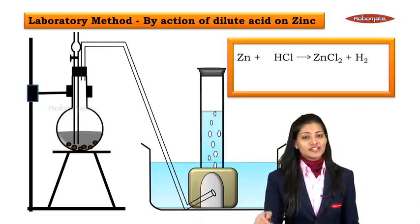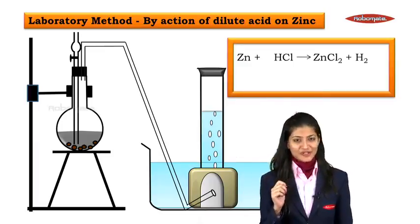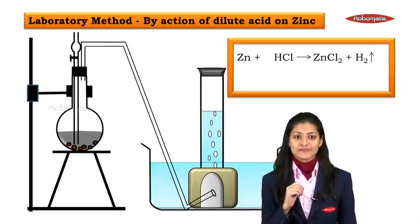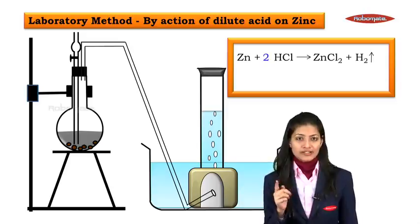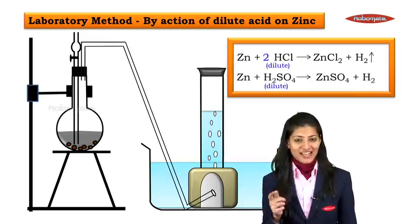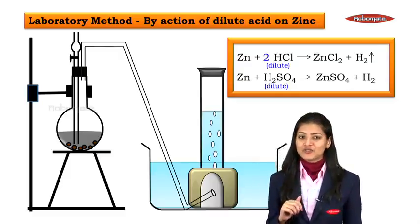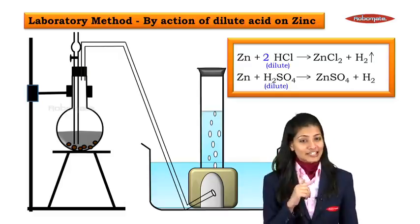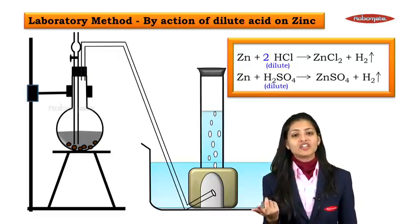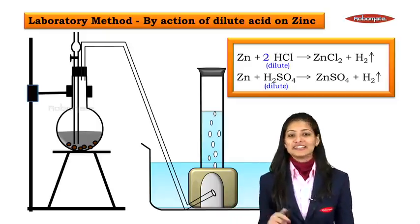The reactions taking place are: zinc with HCl gives zinc chloride (ZnCl₂) along with hydrogen gas. Likewise, zinc with dilute sulphuric acid (H₂SO₄) gives zinc sulphate (ZnSO₄) along with hydrogen gas. The second reaction is self-balanced and need not be balanced separately.